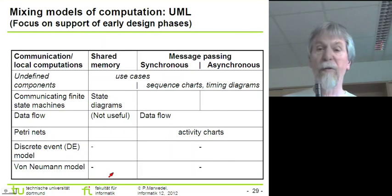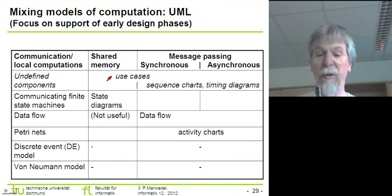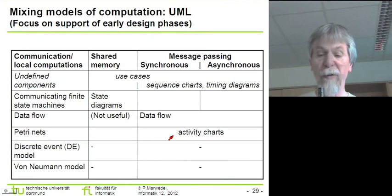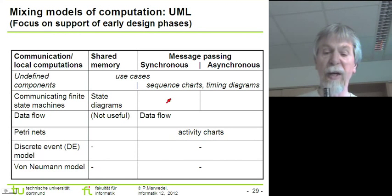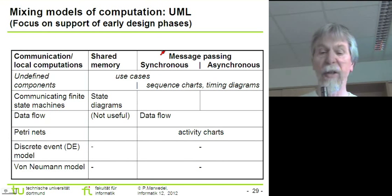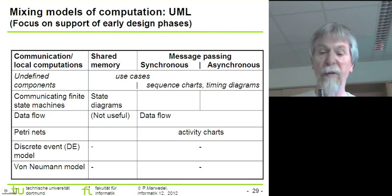The same type of mixing is possible with UML, the unified modeling language. Looking at the table, UML support is mainly constrained towards earlier phases. There is support for undefined components, state diagrams, data flow, and with respect to Petri nets there is a variant called activity charts — but no support in some areas. This table is useful in practice because it allows us to compare the modeling power of different environments for mixing and matching models of computation.